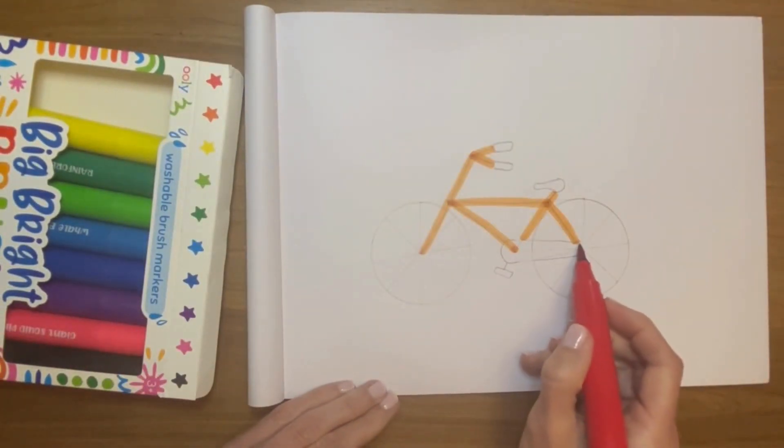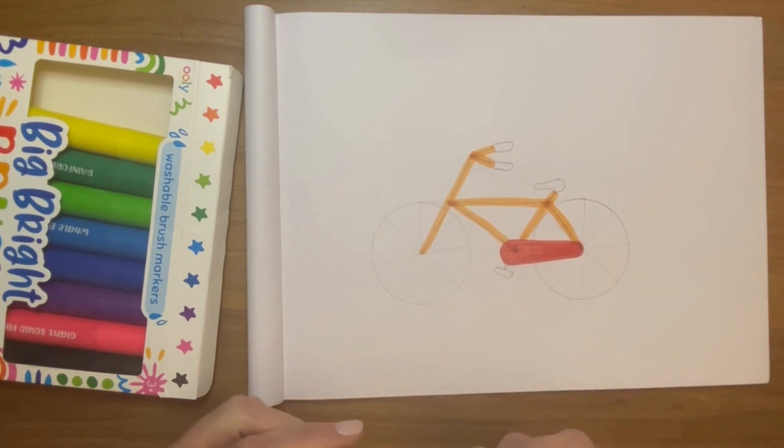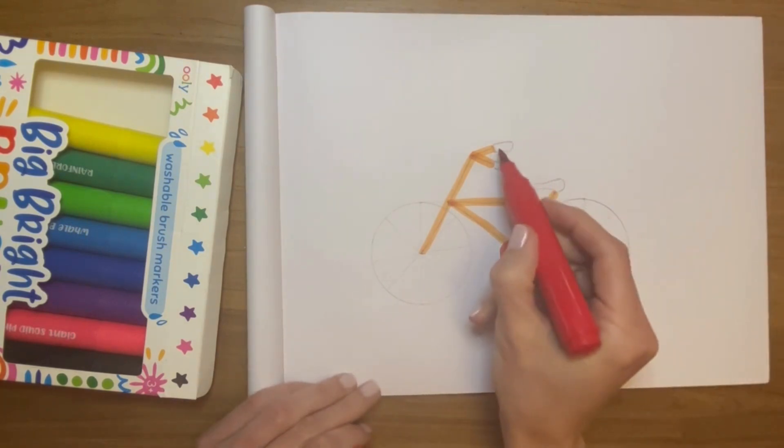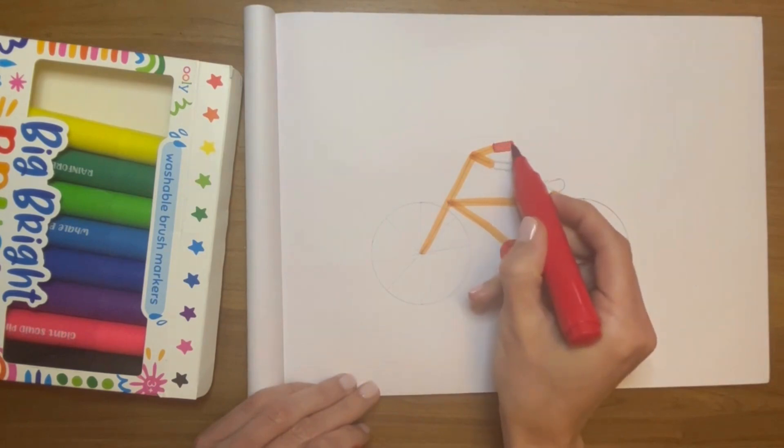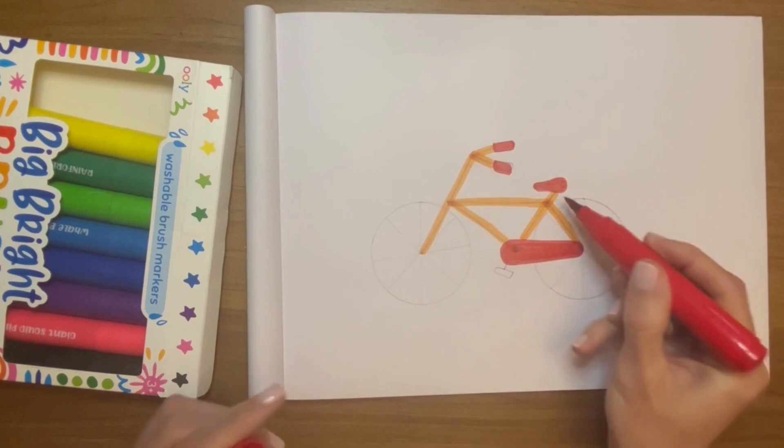I'm going to color this part red, and this part too, and the seat. There you go.